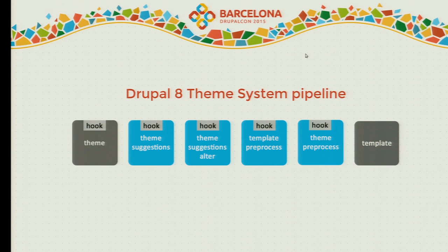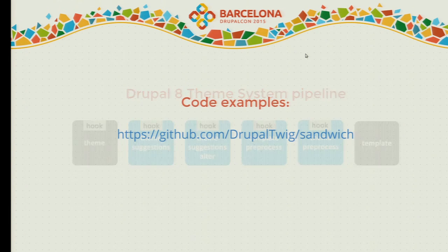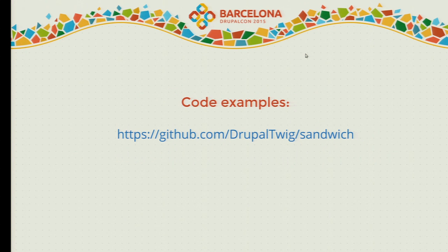Let's proceed to how the Theme System in Drupal 8 should be used. I have a nice overall picture of the pipeline that most people will follow when outputting content from a controller into the browser. It starts with the hook_theme implementation and the render array, then we go to theme suggestions, then to preprocess functions, and then we are at the template. Simple. If you want to download the code I'm using, the whole module is available in a GitHub repository — I'll give the link again later.